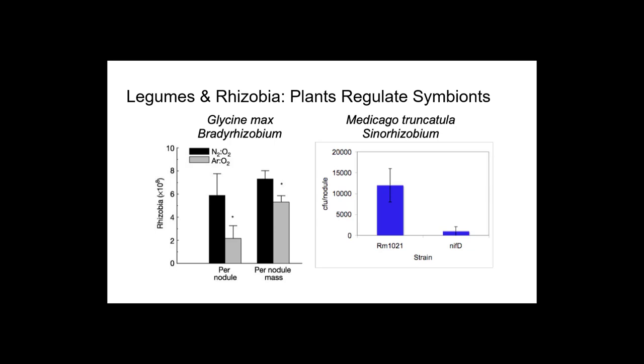We do know that the plants have a lot of control in the symbiosis. In both soybean and Medicago, these are some data showing that the plant will regulate the number of rhizobia that it allows to proliferate within a nodule in response to how much nitrogen that nodule is fixing. This is a really cool experiment where the researchers replaced nitrogen in the atmosphere around the root system with argon, basically preventing these rhizobia from fixing nitrogen. They found a dramatic decrease in the number of rhizobia, both per nodule and per nodule biomass. This is some data from my lab with a lab strain and a non-fixing mutant of that strain that can't produce a functional nitrogenase enzyme, similarly showing a dramatic decrease in the number of rhizobia per nodule.